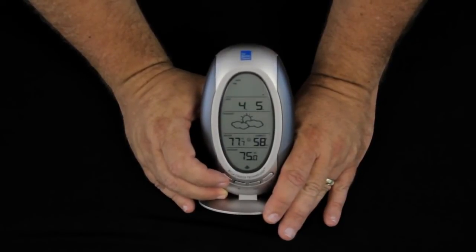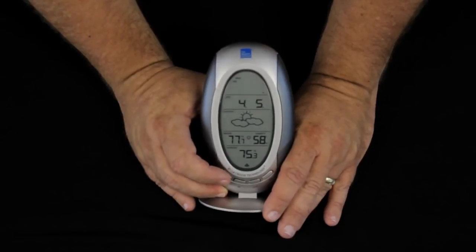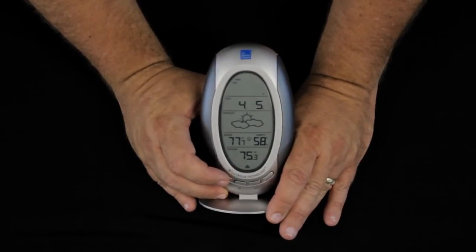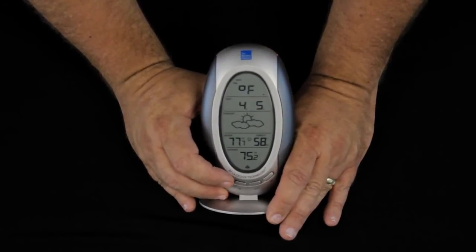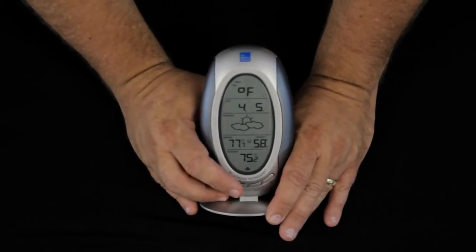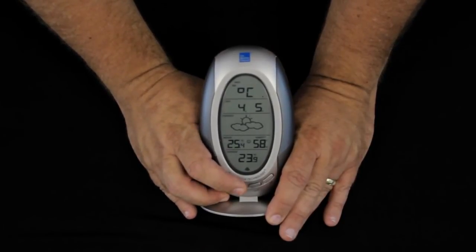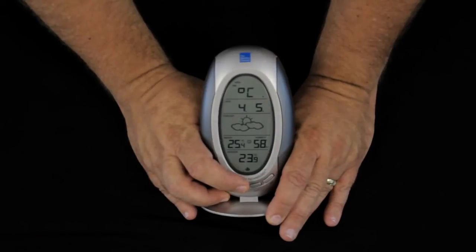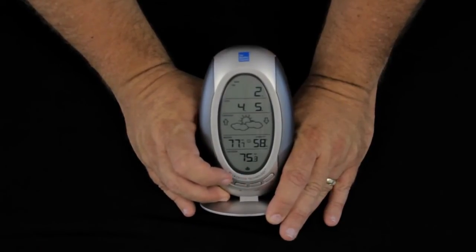Pressing set once again, and we have a snooze alarm. Ten minute snooze alarm if you decide to use the alarm clock function. And pressing the set button once again shows us we're in degrees Fahrenheit. The in button allows us to change to degrees Celsius.